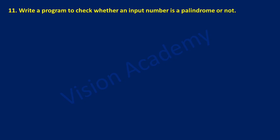Hello and welcome to Vision Academy. In this video we are going to study lab program 11: write a program to check whether an input number is a palindrome or not. Palindrome means even after reversing the number, if the entered number is the same as the reversed number, then such a number is called a palindrome number.